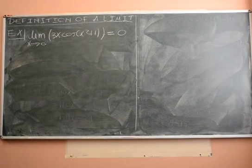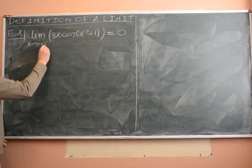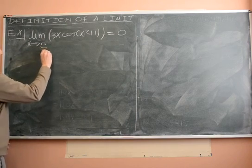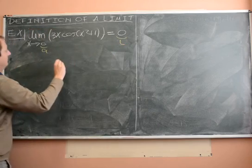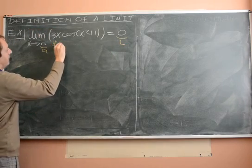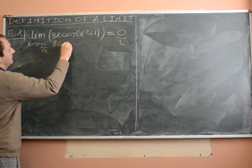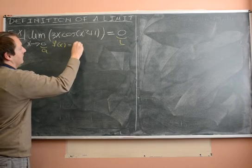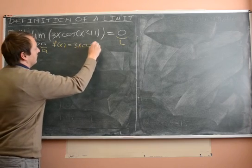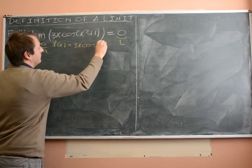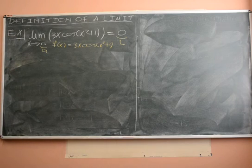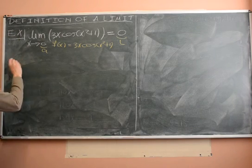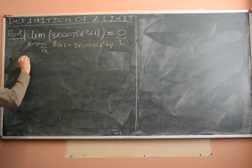So let's just again see: this is our a, that's our L, and of course this is our f of x — 3x cos(x² + 1). And what do we want to prove? Well, we want to prove the following, just from the definition of a limit.